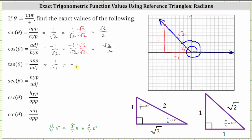Next, the secant function value is equal to the reciprocal of the cosine function value, or the ratio of the hypotenuse to the adjacent side. The cosine function value is negative one divided by square root two, so the reciprocal is negative square root two over one, or just negative square root two. Using the reference triangle, the ratio of the hypotenuse to the adjacent side is square root two divided by negative one, which is again negative square root two.